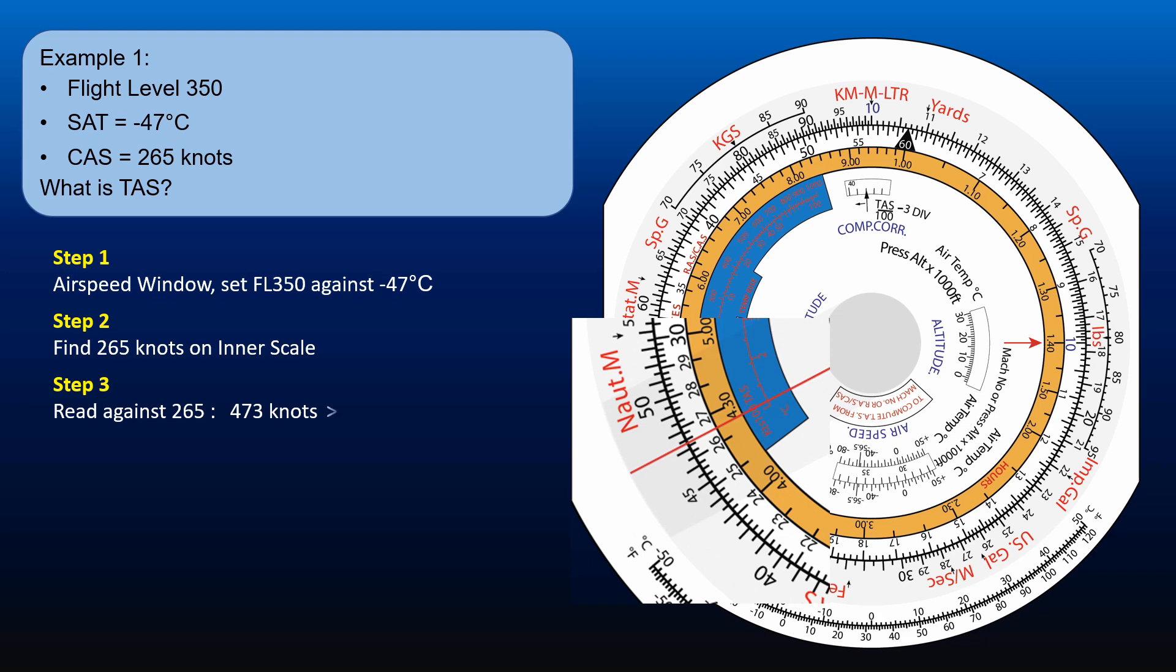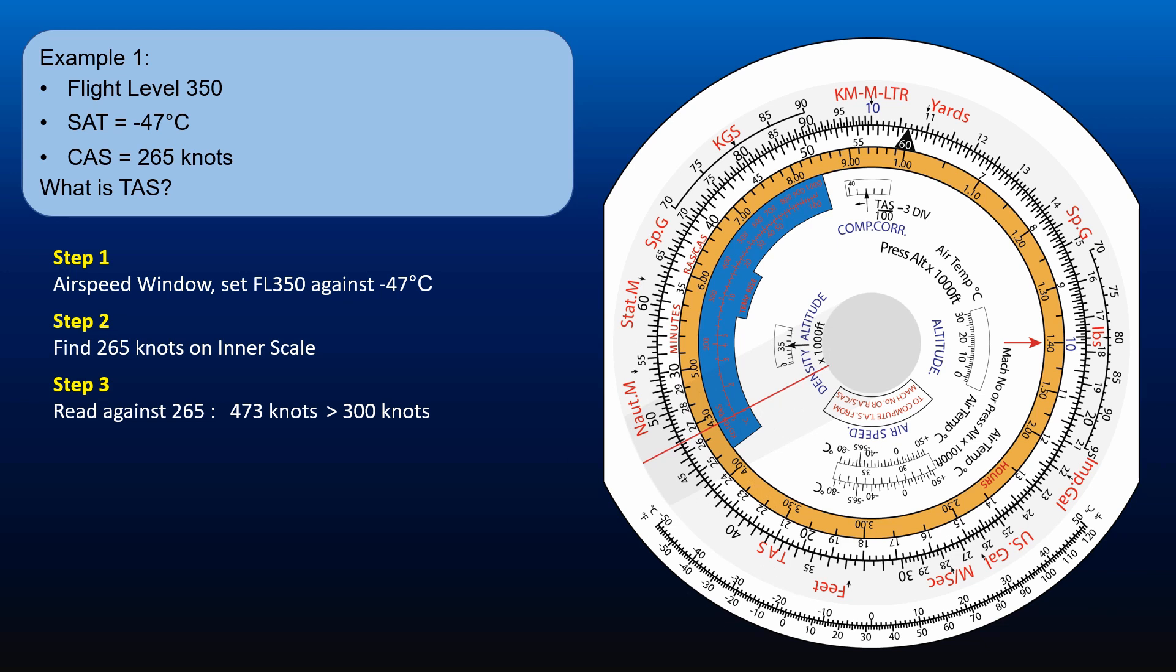473 knots is well above 300 knots. Thus, compressibility correction needs to be applied. So, how do we apply the compressibility correction?